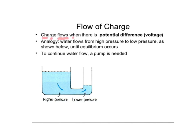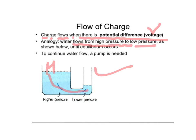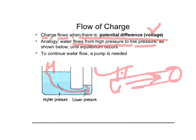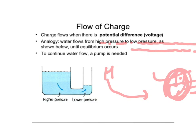Charges flow only when there is a potential difference. This potential difference is also called voltage. Water flows from high pressure to low pressure, and similarly, in a conductor, electrons flow from high electric potential to low electric potential. The difference of electric potential across the two terminals of a conductor is called electric potential difference.